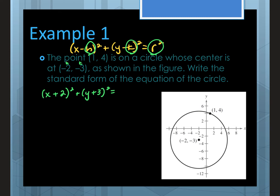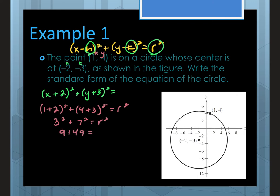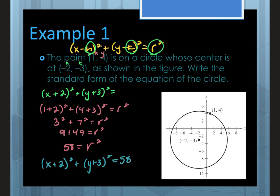To find r², substitute the point (1, 4) into the equation: (1 + 2)² + (4 − (−3))² = r². That gives 3² + 7² = r², so 9 + 49 = r², and r² = 58. Since the question only asks for the equation, we don't need to simplify — just plug it in: (x + 2)² + (y + 3)² = 58.